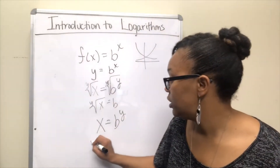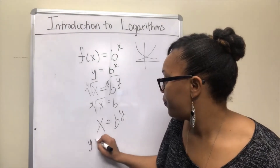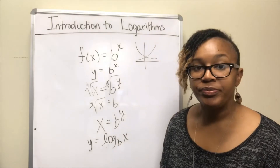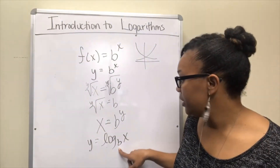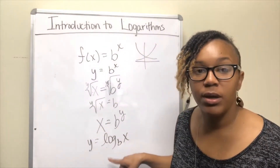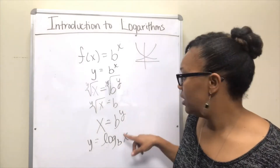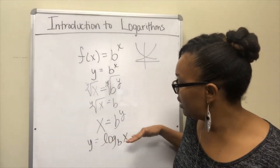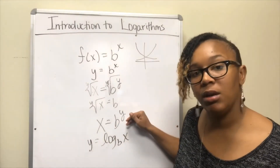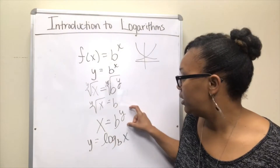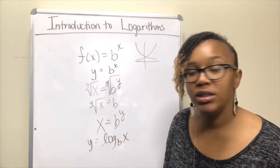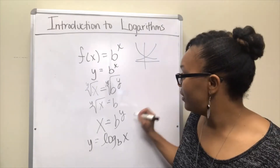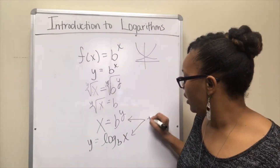Your logarithmic function is defined by y equal log base b of x. This b is written lower as a subscript, but it's the base, and you're taking the log of x. This statement is equivalent to x equals b to the y — it's just another way of rewriting it so that y is solved for. You need to know that these two forms are equivalent.